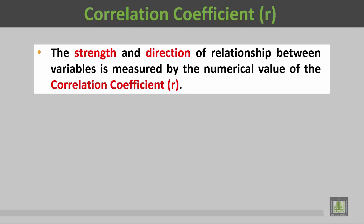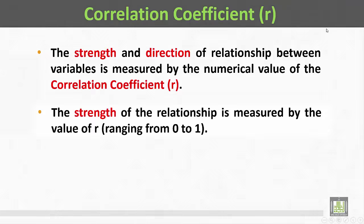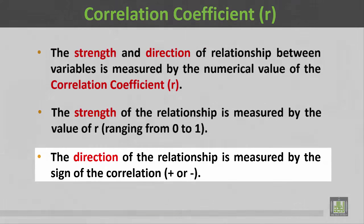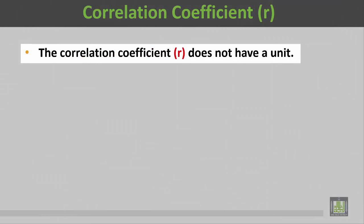The strength and direction of the relationship between variables is measured by the numerical value of the correlation coefficient R. The strength of the relationship is measured by the value of R, ranging from 0 to 1. The direction of the relationship is measured by the sign of the correlation — whether it is negative or positive.